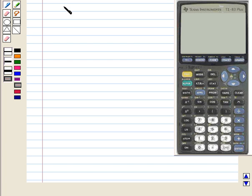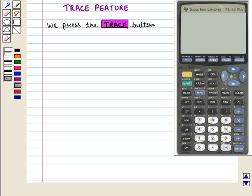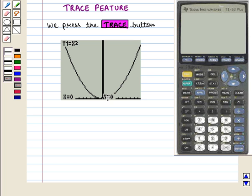Now let us see the trace feature. We press the trace button. On screen, we can see the points which lie on the graph as the cursor is moved. It will give the exact values of the function on the graph.